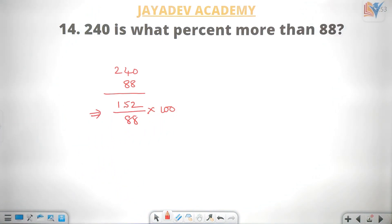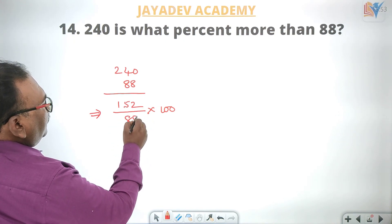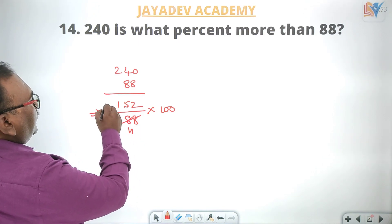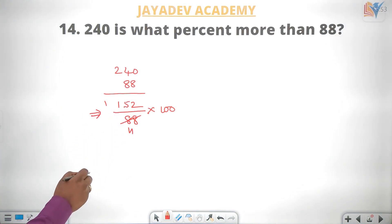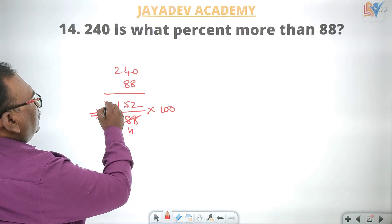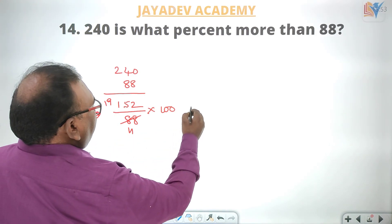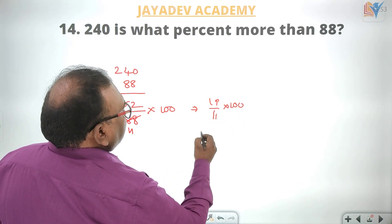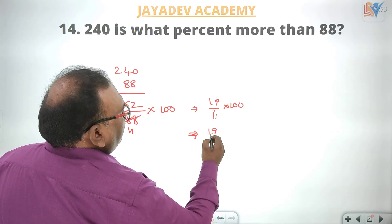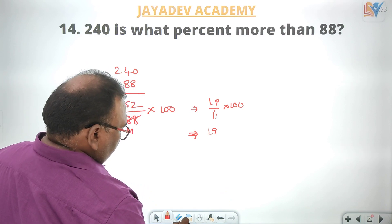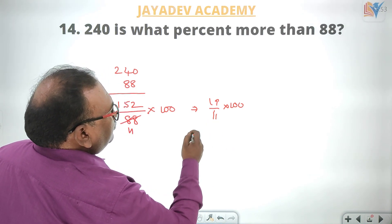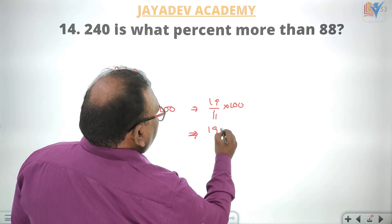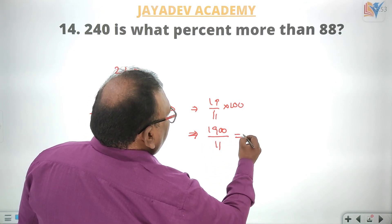88 into 100. The calculation gives 1900 divided by 11, equal to 172 and 8/11.